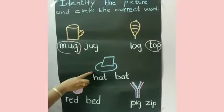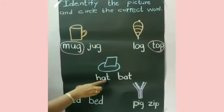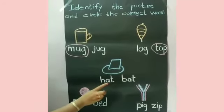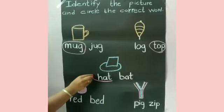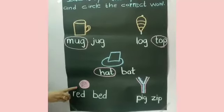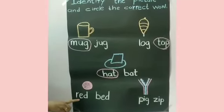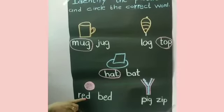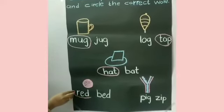Which picture is this? Yes, it is a hat. H-A-T hat, B-A-T bat. So we will circle on H-A-T hat. Now, which picture is this? R-E-D red, B-E-D bed. We will circle on R-E-D red.